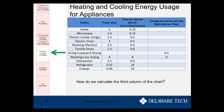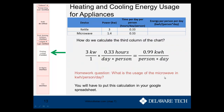Calculating the energy column is much easier than the plane calculation. For the kettle: it uses 3 kilowatts for 0.33 hours per person per day. Multiplying those together gives kilowatt hours per person per day. For homework, repeat this calculation for the microwave, and you'll also need to enter this into your Google spreadsheet for your state project.